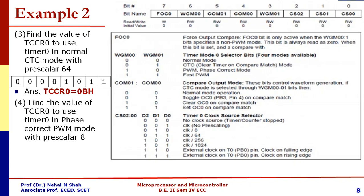Suppose if we want to use Timer 0 in phase correct PWM mode with prescaler 8, then WGM bits are going to be 10. COM bits will be 00, and due to prescaler 8, CS bits are going to be 010. This is going to result into 42 hex.